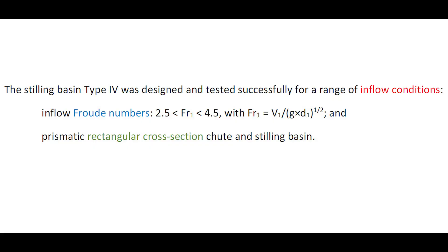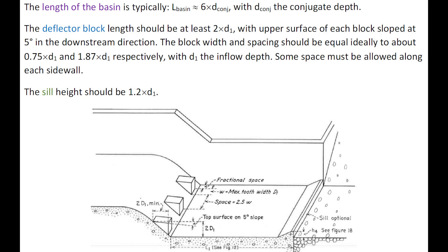The stilling basin Type 4 was designed and tested successfully for inflow Froude numbers between 2.5 to 4.5, with a prismatic rectangular cross-section and a chute and stilling basin configuration. The basin length is typically 6 times the conjugate depth. Deflector blocks have a length of about twice the inflow depth, with the upper surface sloped downward by about 5 degrees. Block width and spacing are ideally 0.75 and 1.87 times the inflow depth respectively, with a half-block space along each sidewall. The sill height should be 1.2 times the inflow depth.